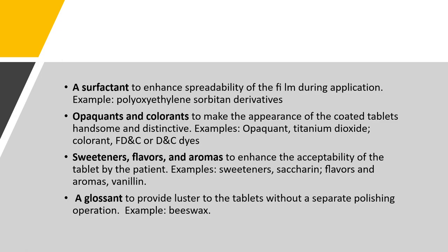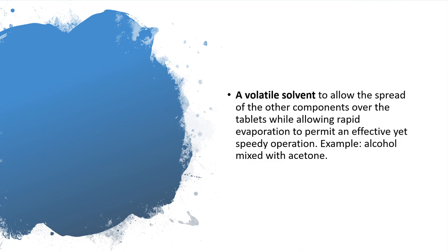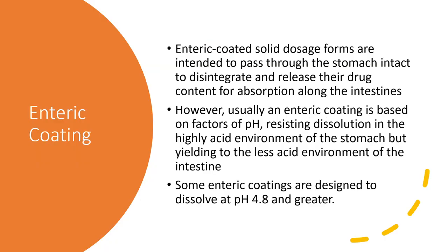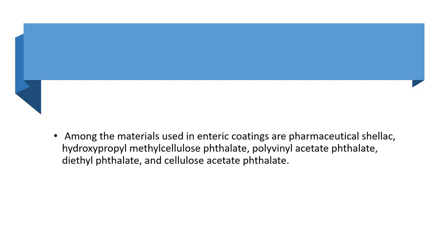You also have surfactants to increase spreadability of the film, opacants and colorants to give color to the film, sweeteners, flavors, and aromas, a glossant to provide luster, and a volatile substance so that your film is easily spread across your tablet. Finally, you have your enteric coatings, which are primarily a type of film coating that renders your tablet resistant to acidic pH. These are designed to dissolve at pH 4.8 and greater. Materials used in enteric coating include shellac, hydroxypropyl methylcellulose phthalate, polyvinyl acetate phthalate, diethyl phthalate, and cellulose acetate phthalate.